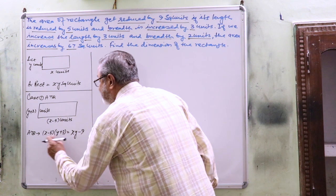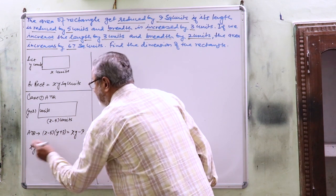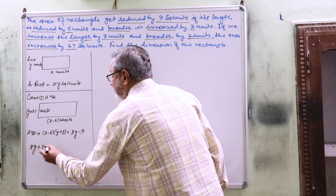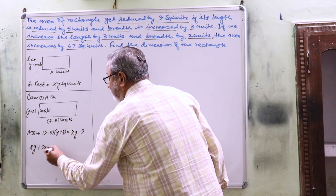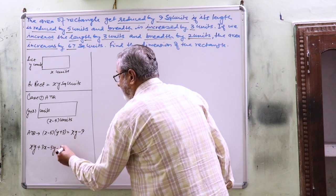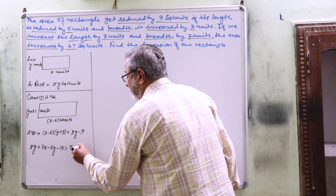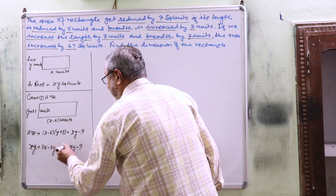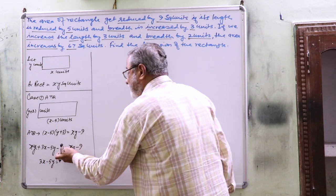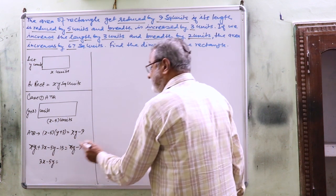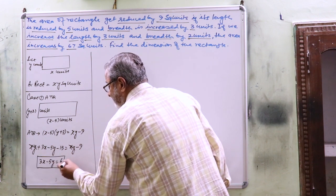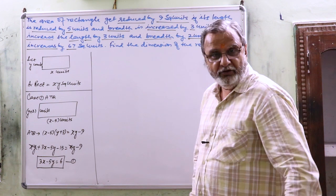Expanding: x multiplied with y gives xy, x multiplied with 3 gives 3x, minus 5 multiplied with y gives minus 5y, and minus 5 multiplied with 3 gives minus 15, and that equals xy minus 9. So xy cancels, and 3x minus 5y minus 15 equals minus 9, which gives us 3x minus 5y equals 6. This is the first linear equation.